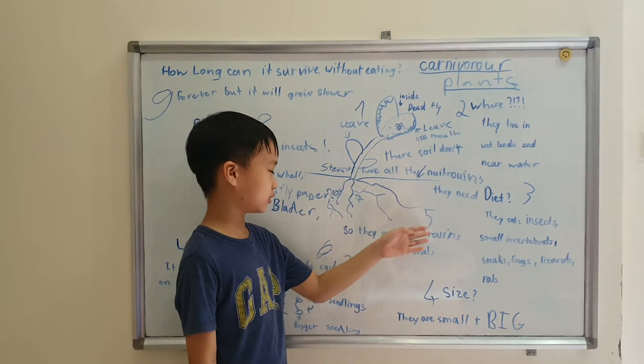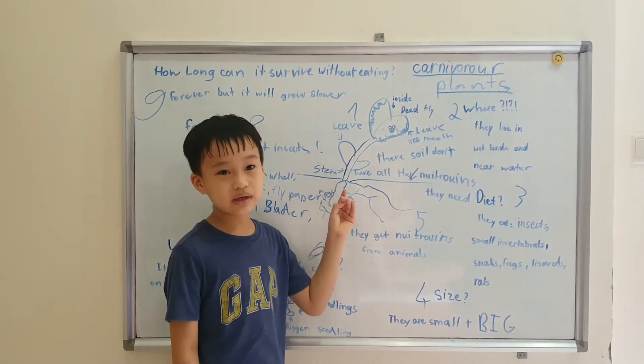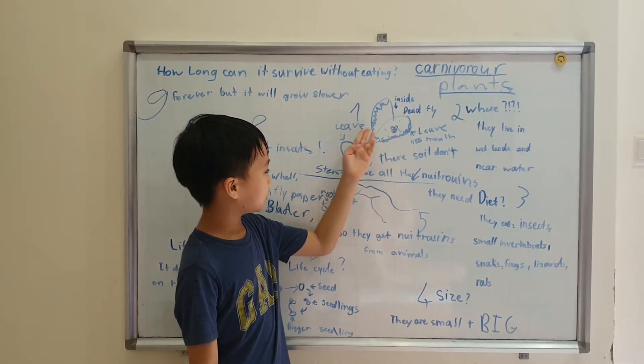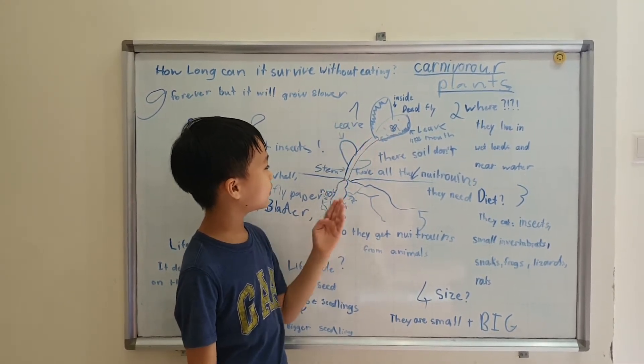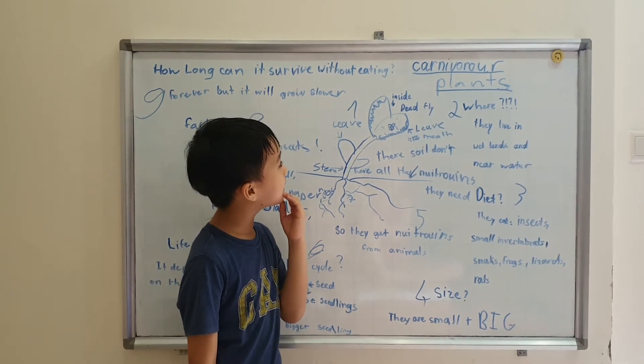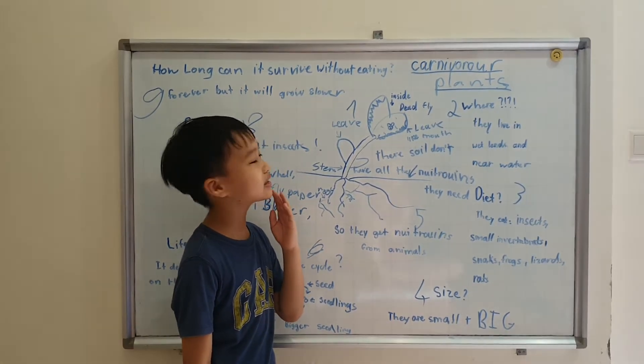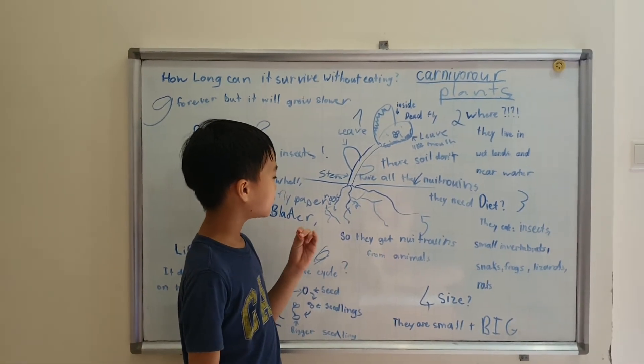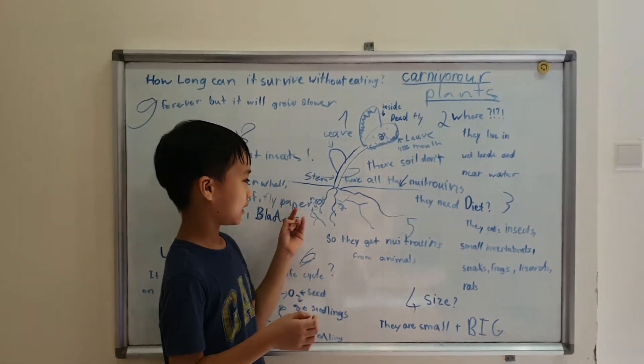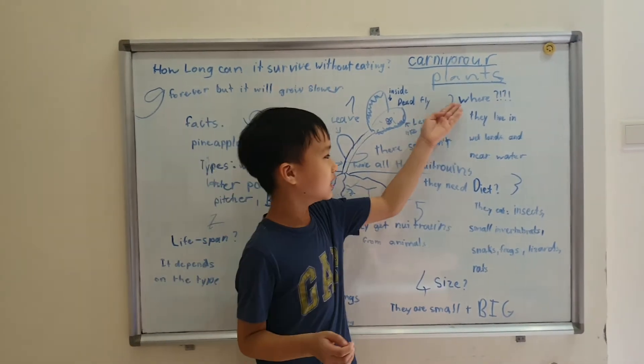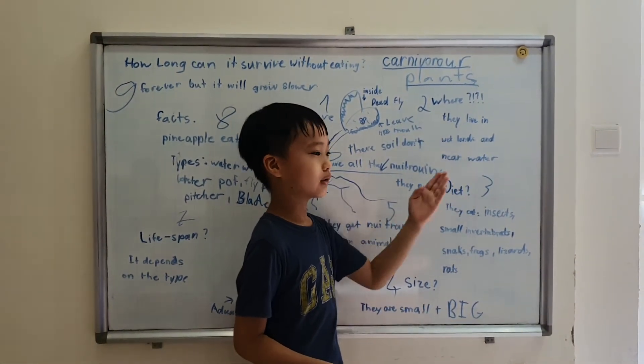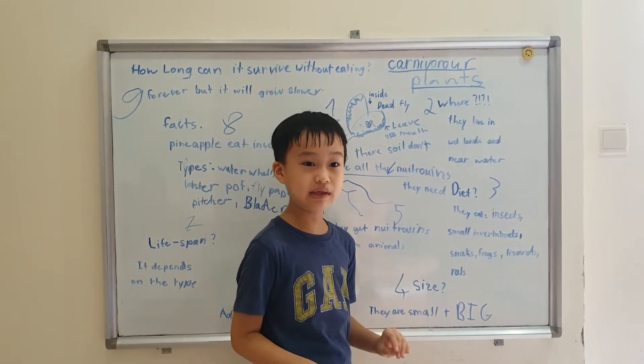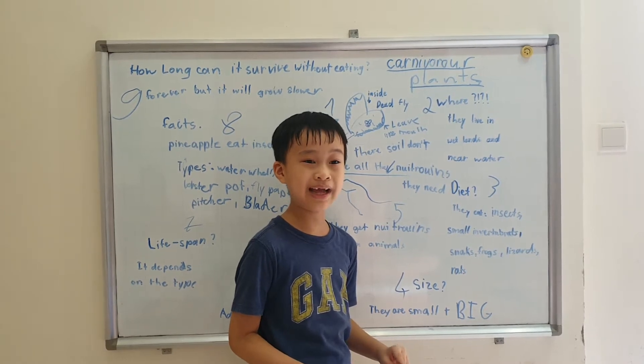So they get nutrients from animals. And the leaf is for collecting sunlight. It lives in wetlands near the water. In the water there is a lot of water but not all the nutrients like nitrogen.